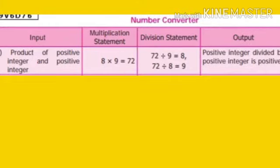Let us see the multiplication statement: 9 into 8 is equal to 72. The product 72 divided by 8 always gives the integer 9. Similarly, 72 divided by 9 always gives the positive integer 8. From this we can understand that when we divide a positive integer by a positive integer, we get a positive integer.